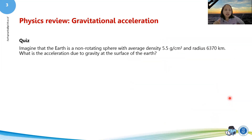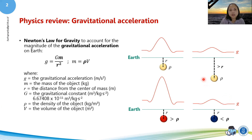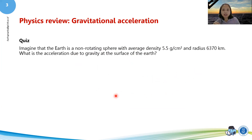Here is a quiz. Imagine that the Earth is a non-rotating sphere with an average density of 5.5 grams per cubic centimeter and a radius of 6,370 kilometers. What is the acceleration due to gravity at the surface of the Earth? I'll put this in the assignment page, so don't worry about it right now. The first hint is to understand the equation from this page so you can input the data and get the surface gravity. The second hint is to know how to calculate the volume of a sphere, since the Earth here is treated as a non-rotating sphere.